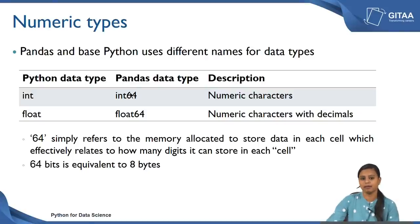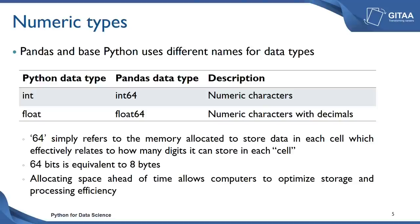Why are we concerned about memory allocation in each cell? Because allocating space ahead of time allows computers to optimize storage and processing efficiency. Whenever you read any data into Spyder or any Python IDE, it gets read with a data type for each variable according to the values it has, and memory is allocated to optimize storage and processing efficiency.